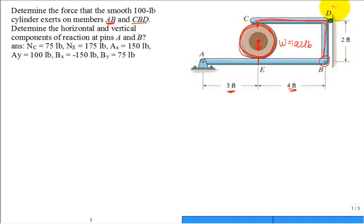And what is at D? What is that type of support? Yeah, a roller. So, just leave it, the weight, 100 pounds.